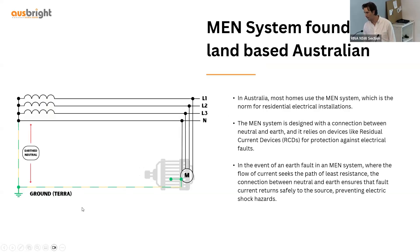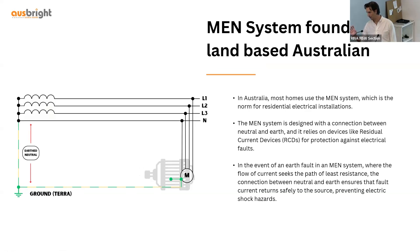This is an MEN system — what you would find in your homes. You have that Earth-neutral connection, which you can see here. Earth is connected to neutral, so in the event of an Earth fault, this Earth would be used as the low impedance path to carry the strong Earth fault currents.